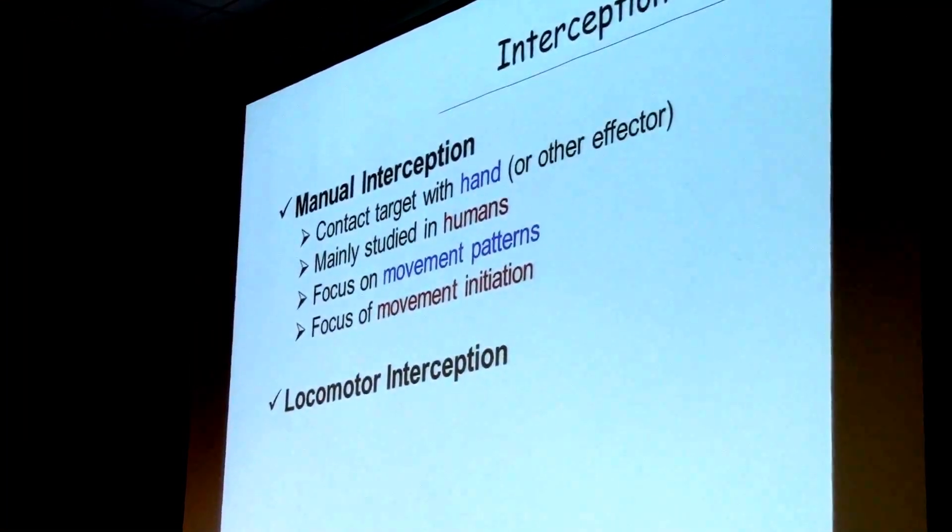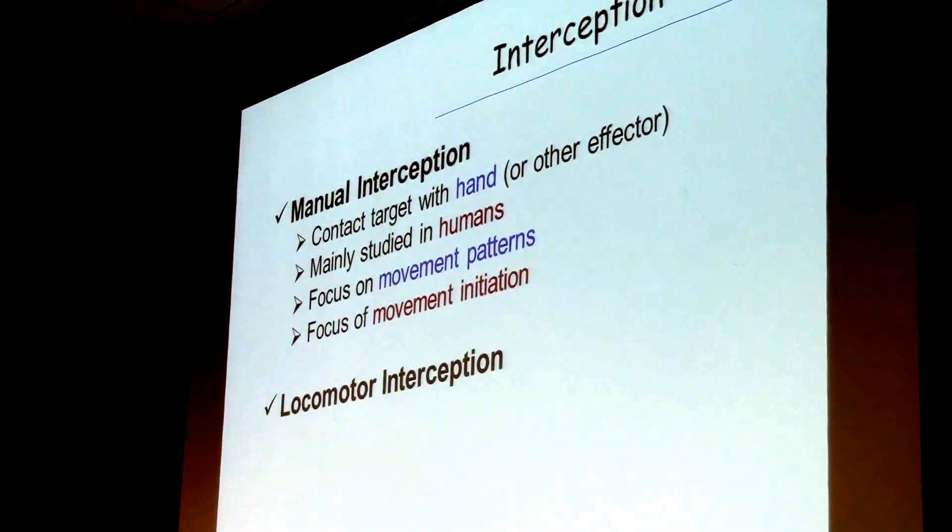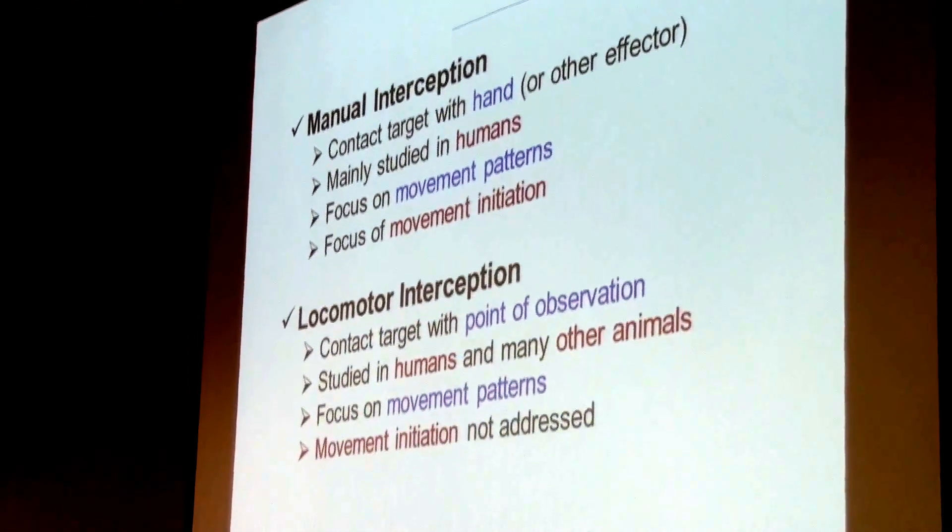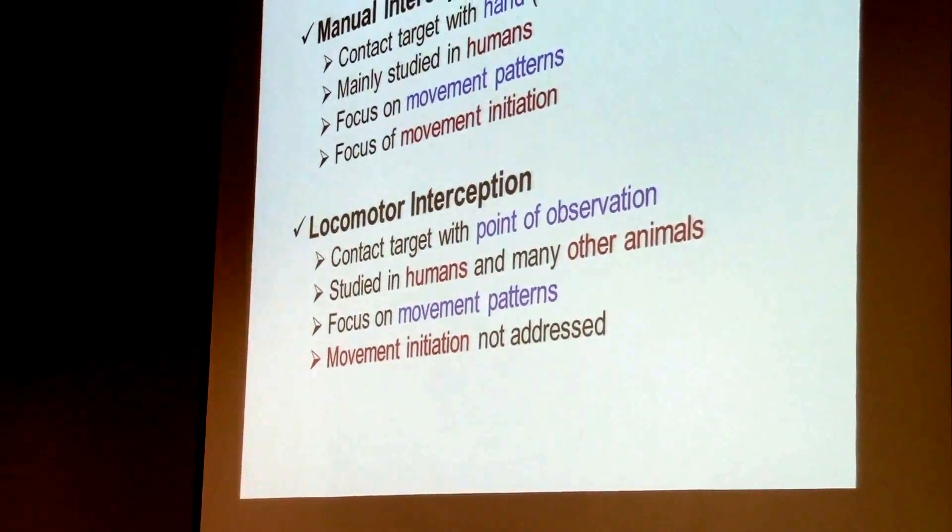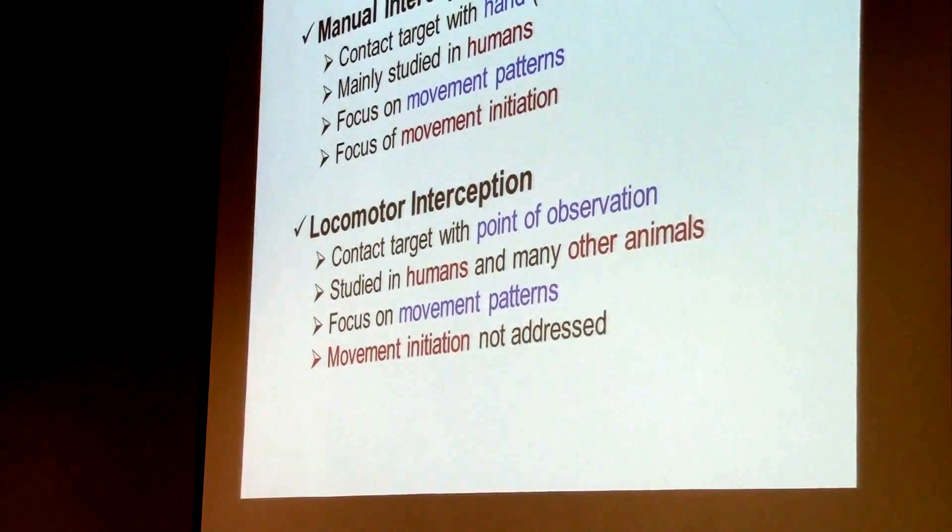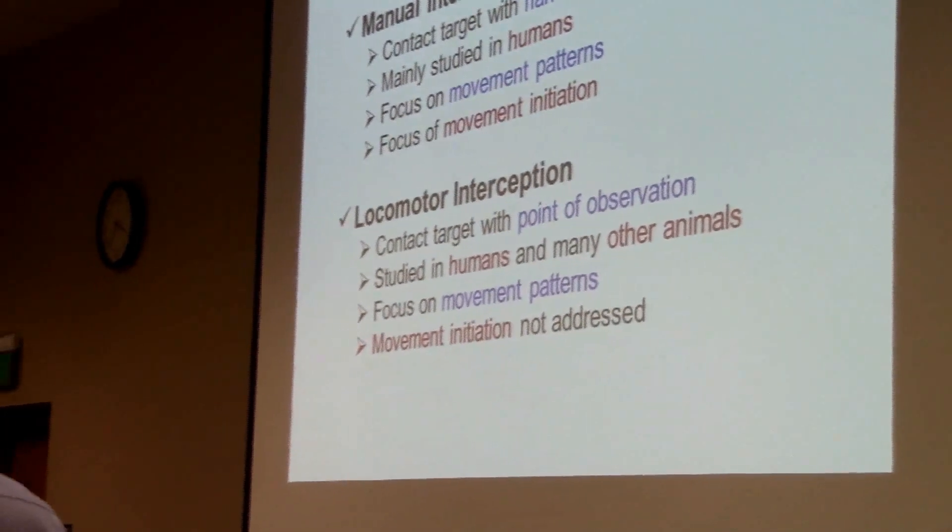Manual interception has been almost exclusively studied in humans. And the initial focus was on movement initiation, looking for thresholds of perceptual variables that could explain why you started the movement, mostly unsuccessful for generalization. And then later has moved on to movement patterns. Locomotor interception, on the other hand, is basically about bringing the point of observation into contact with the target. Movement initiation is almost never addressed. And so the focus is on movement patterns.